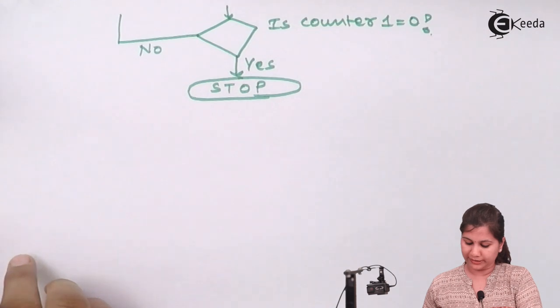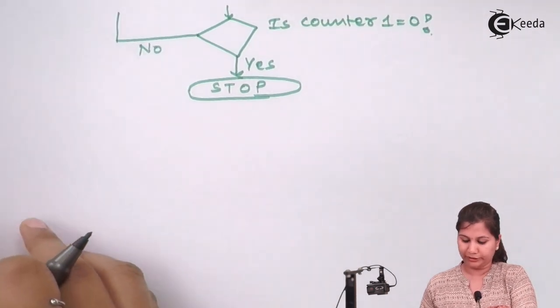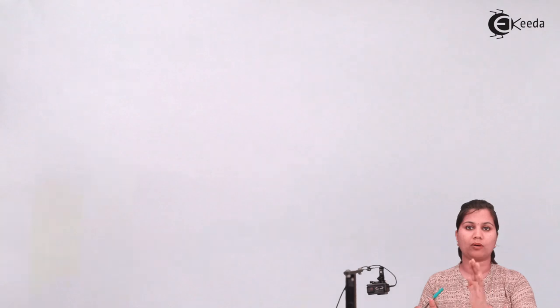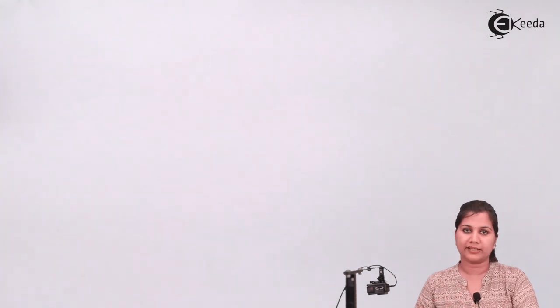Now let's write the program. To do this, we replace each block in the flowchart with the corresponding 8051 assembly instructions, making it straightforward to translate the flowchart directly into code.